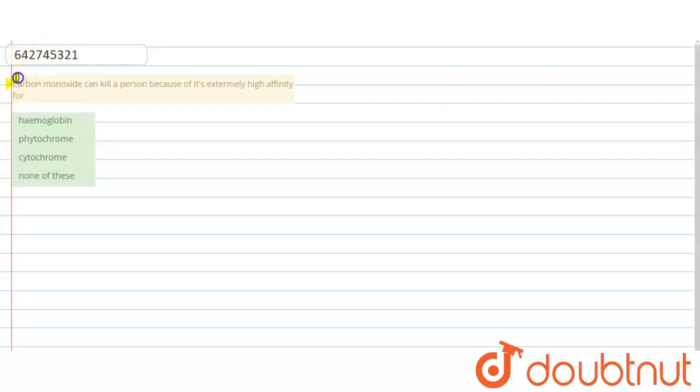Our question says carbon monoxide can kill a person because of its extremely high affinity for... So as we know that carbon monoxide is a very dangerous gas. Why is this gas very dangerous?